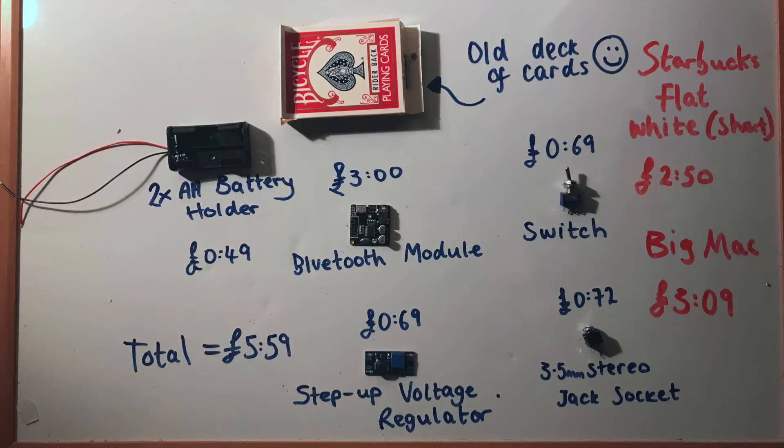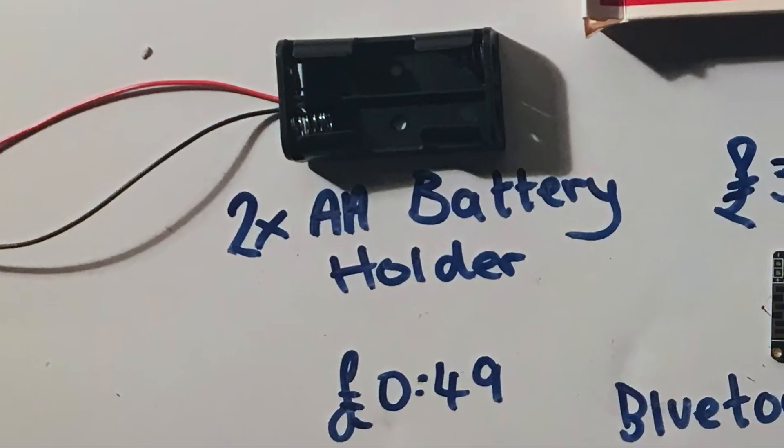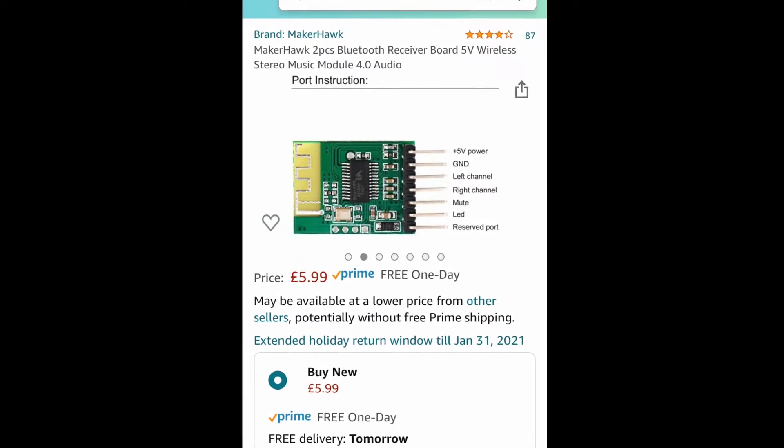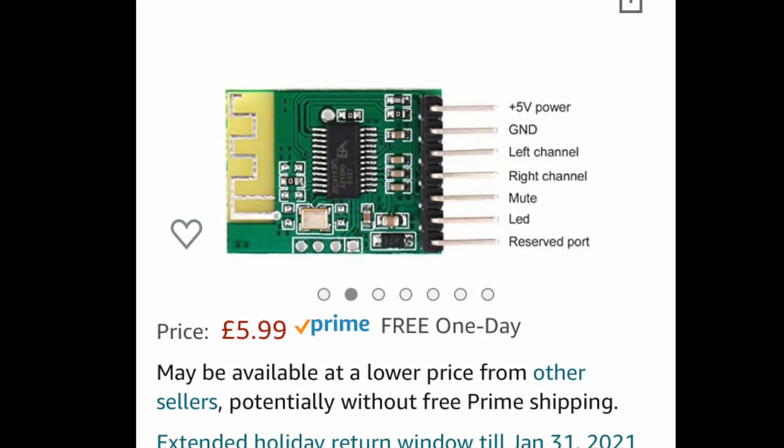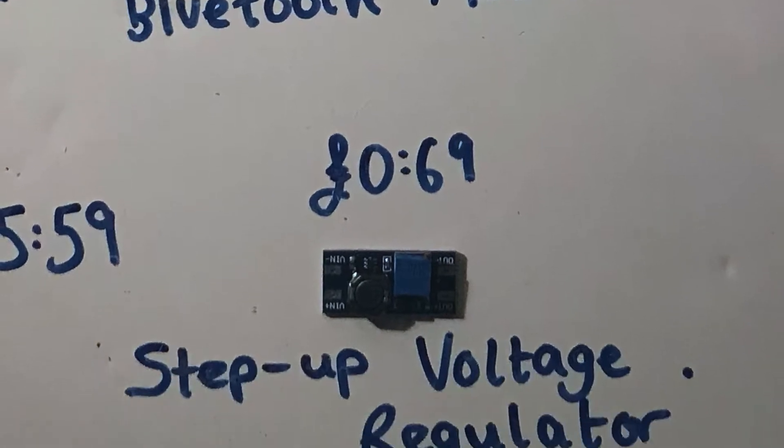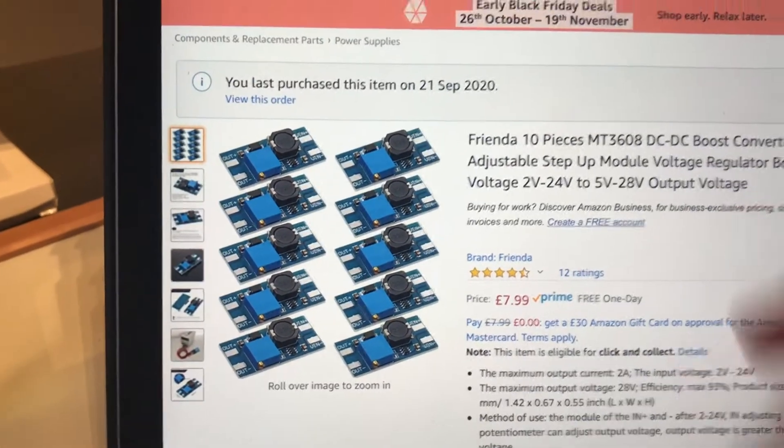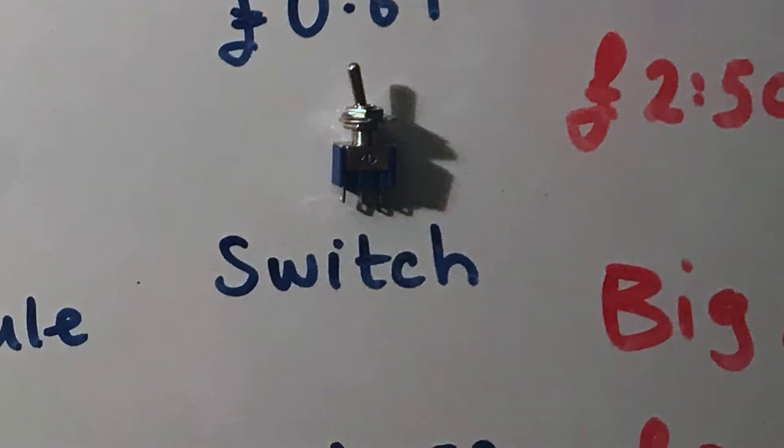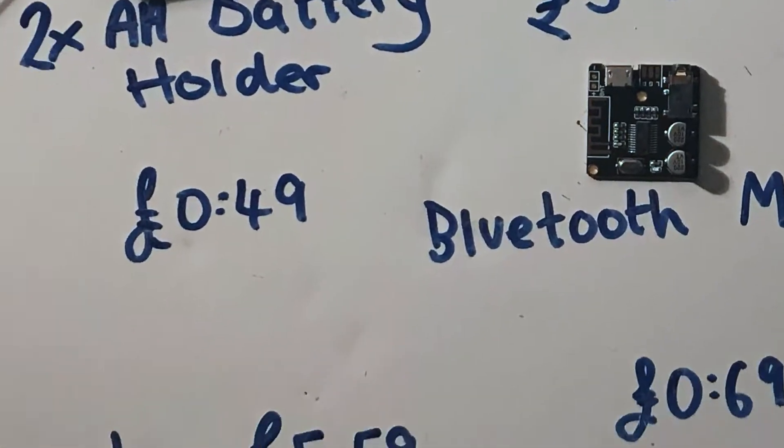Let's get started. Just a quick parts list. I could have got these items a little bit cheaper elsewhere, but I just got a 2xAA battery holder for £0.49, £3 for a Bluetooth module. This isn't the exact Bluetooth module that we got, but you can see it is relatively cheap as well and it has a few extra parts onto it. You'll also notice it has different legs and these look a lot easier to solder to. £0.69 for a step up voltage regulator. £0.69 again for a switch and £0.72 for a 3.5mm stereo jack socket and of course an old deck of cards but that was free.